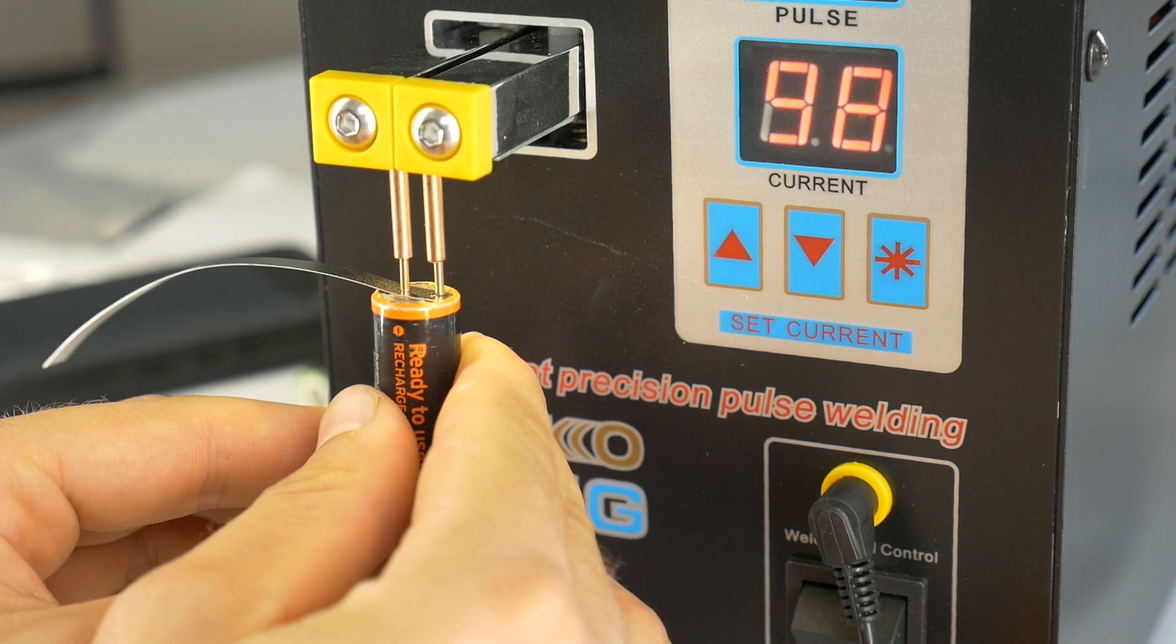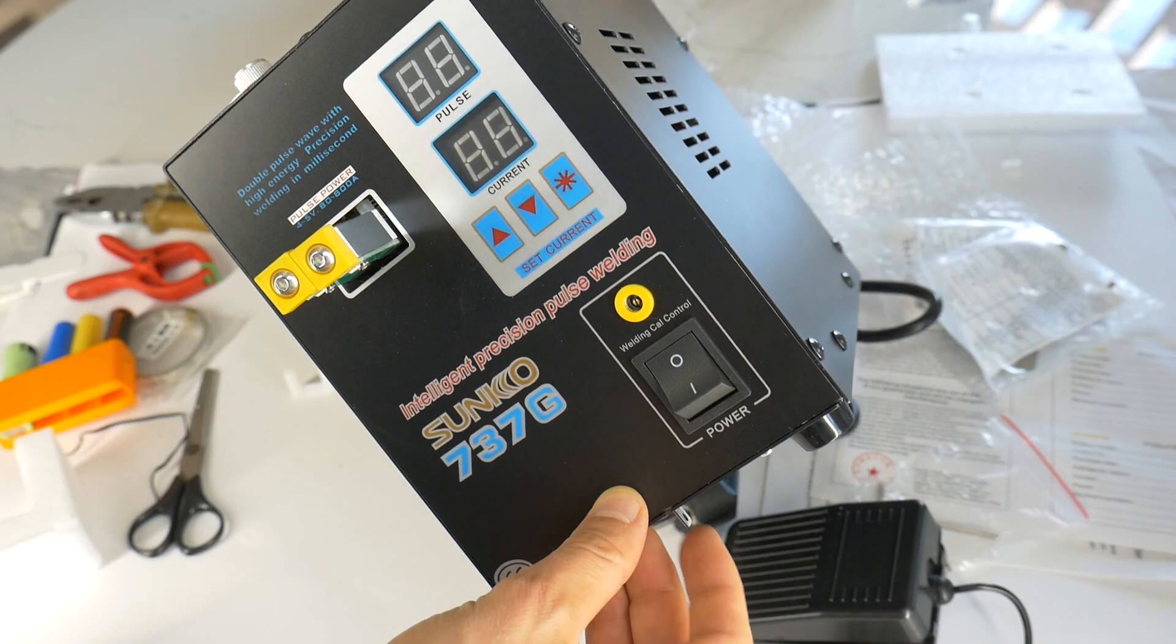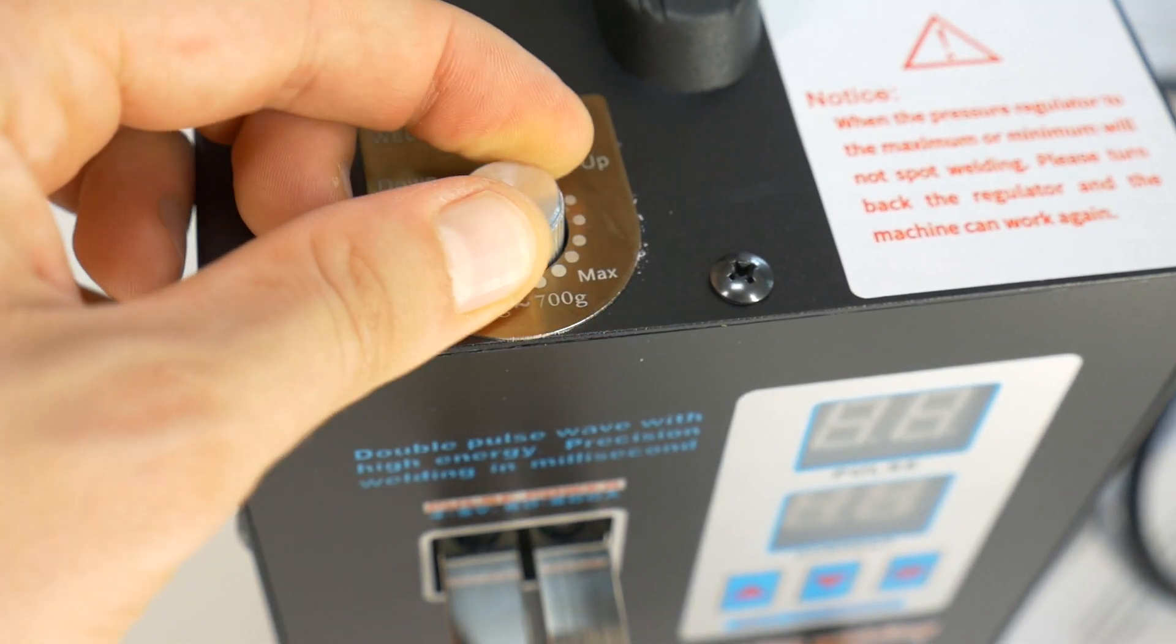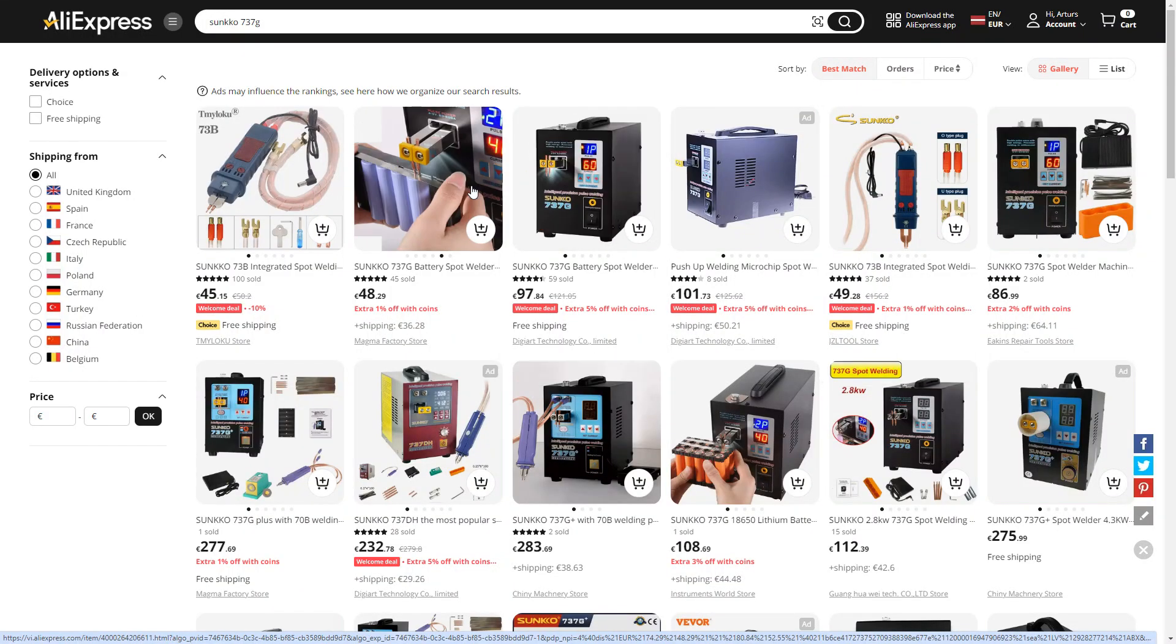Hello, today I will show you and test out this so-called 737G battery spot welder from Aliexpress, which cost around $100.